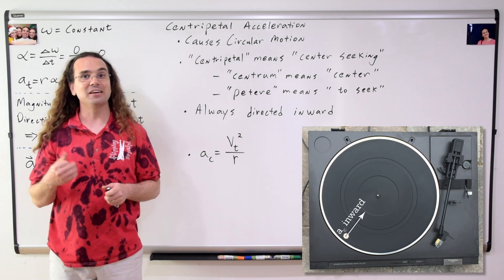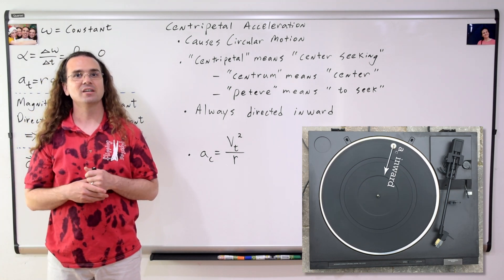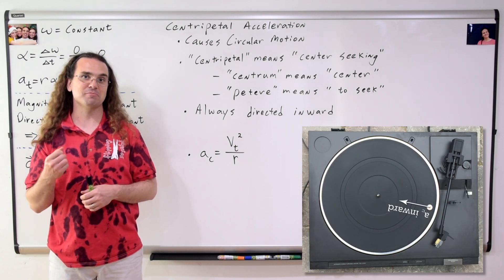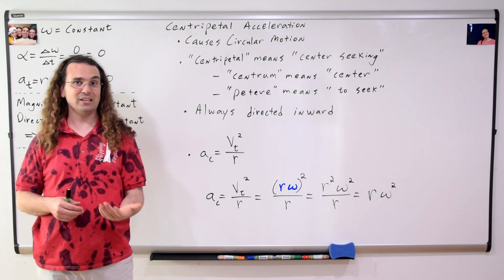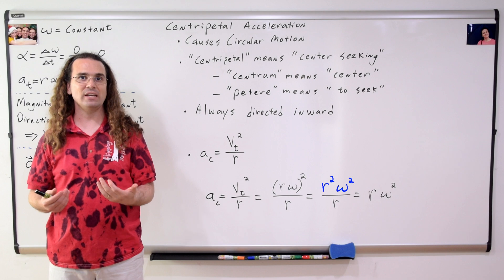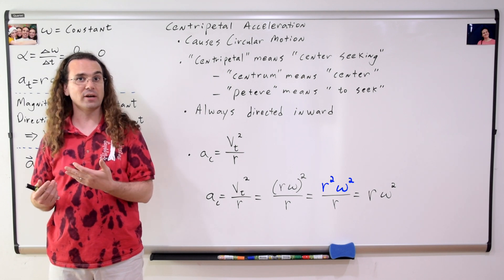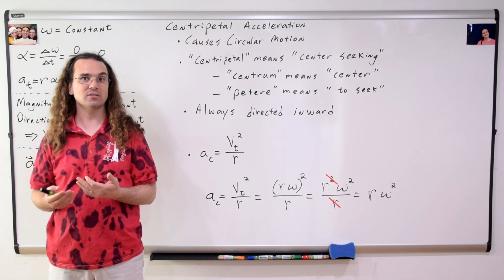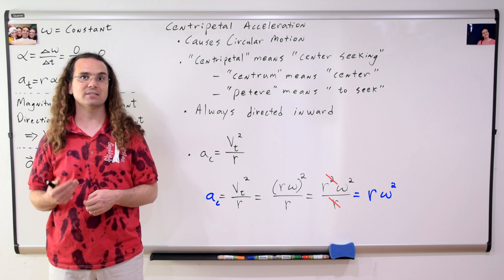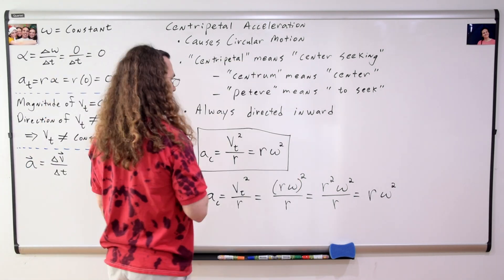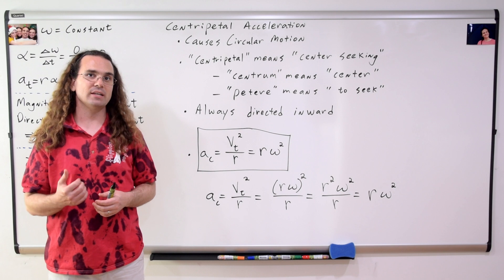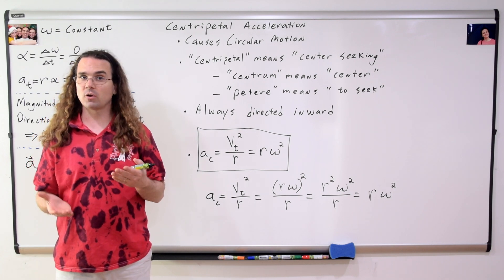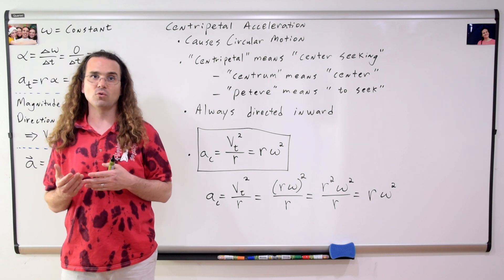Please say the equation for centripetal acceleration: centripetal acceleration equals tangential velocity squared divided by radius. We can substitute the equation for tangential velocity into the equation — the radii simplify — and centripetal acceleration also equals radius times angular velocity squared. Centripetal acceleration equals both tangential velocity squared divided by radius, and it equals radius times angular velocity squared. Which equation we use depends on what we are trying to find or what we know.